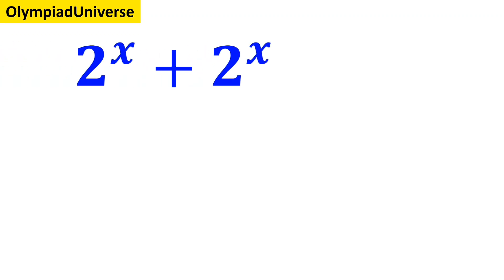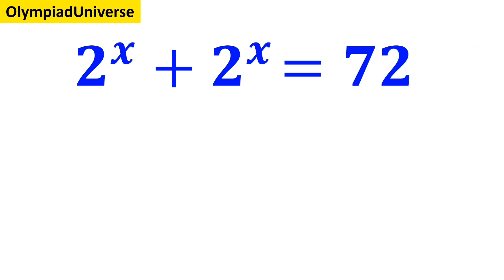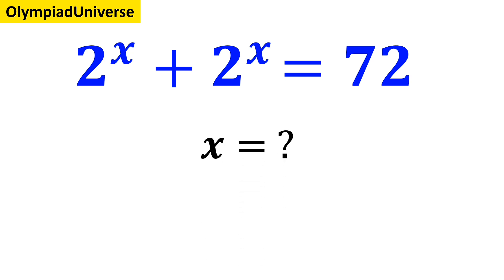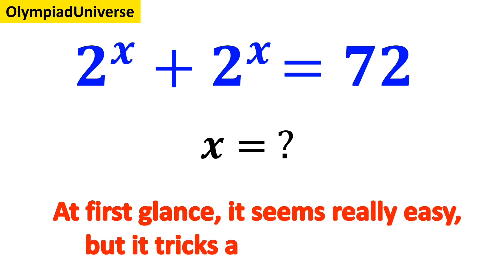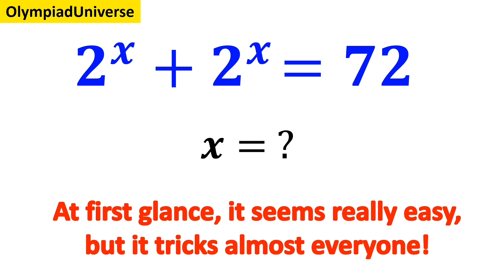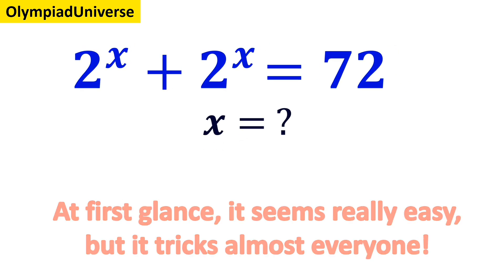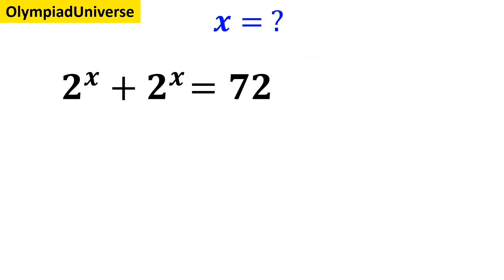If 2 to the power of x plus 2 to the power of x is equal to 72, then what is the simplest possible solution for x? At first glance, it seems really easy, but it actually tricks almost everyone. Let's take a closer look and solve it together.